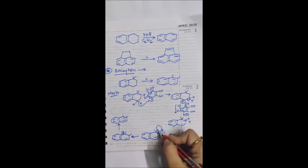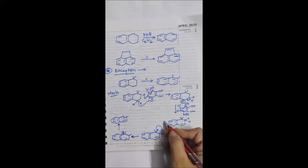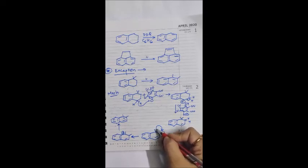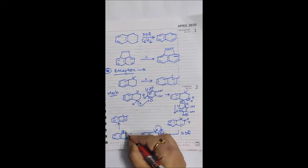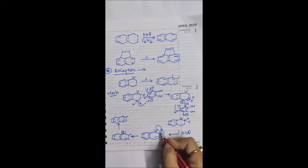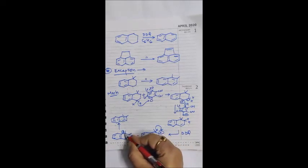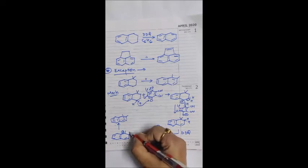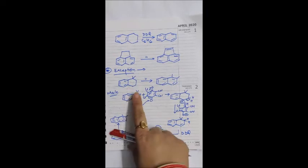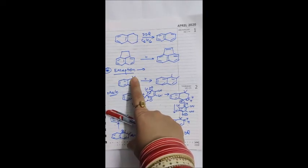In the first step, a hydride ion is lost to the DDQ molecule and a positive charge is created. Normally if a proton were present instead of CH3, that proton would leave and a double bond would form. But here, a CH3 group migrates to the positive charge — a methyl shift — moving the positive charge to an adjacent carbon. That carbon has an H which leaves, forming a double bond. So instead of 1,1-dimethyl naphthalene, we get 1,2-dimethyl naphthalene as the product.